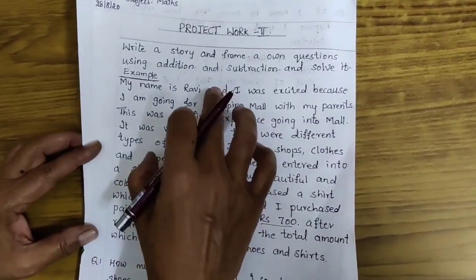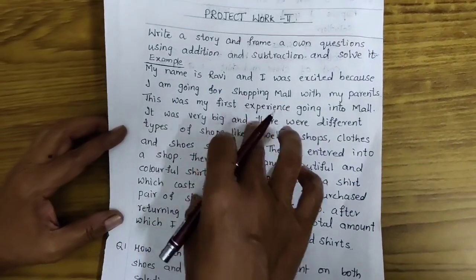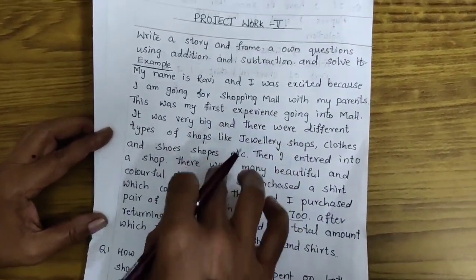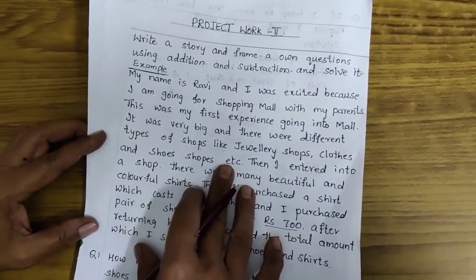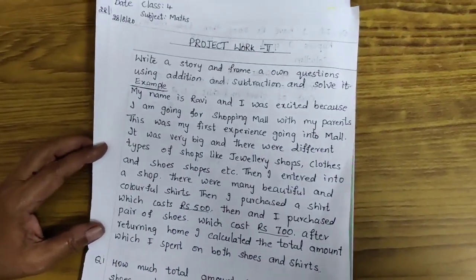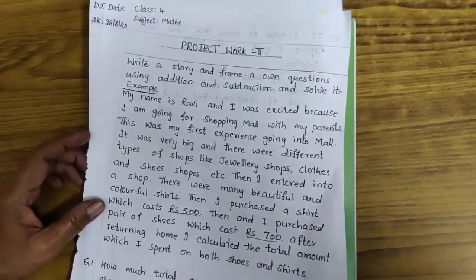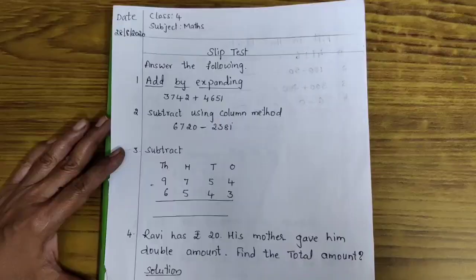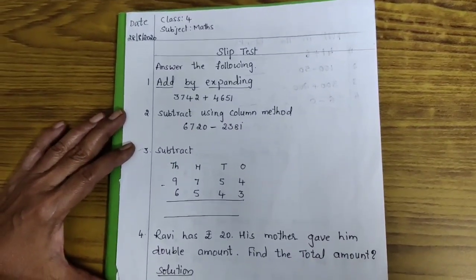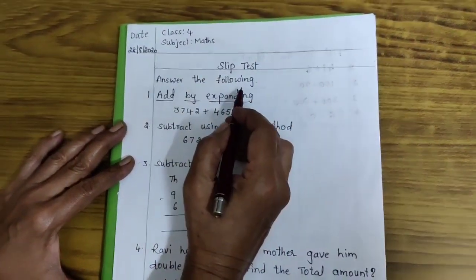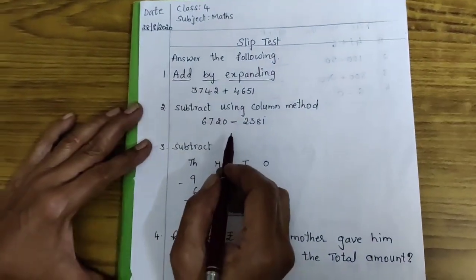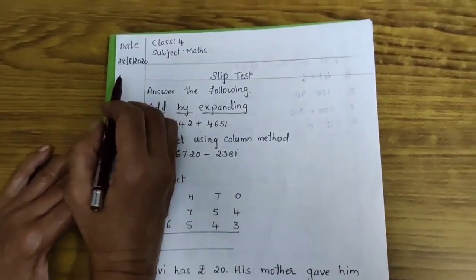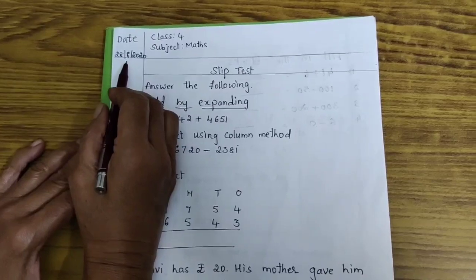Children, like this you write the small story with your own. And frame a question on that story children. Now, I will explain slip test. How to write slip test? Children, this is a slip test. This slip test also will write in activity book. Write first date 28-8-2020.